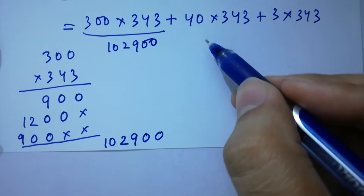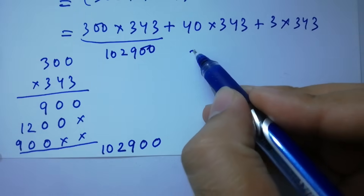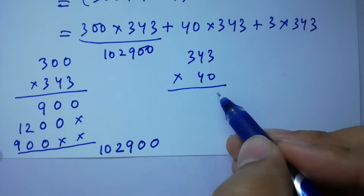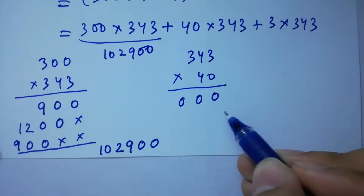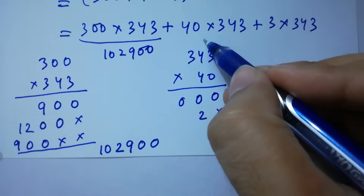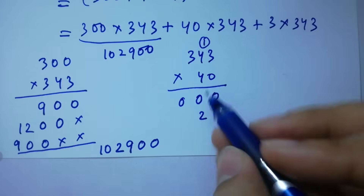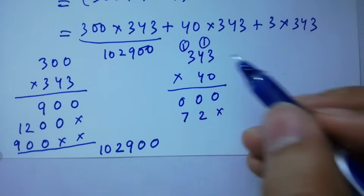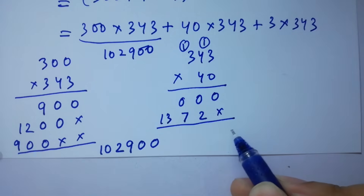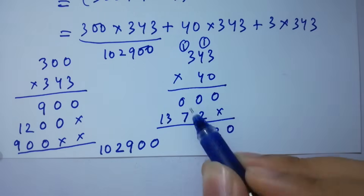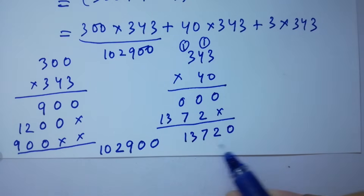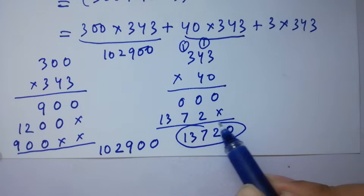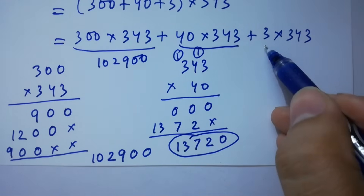Next, 40 times 343. 343 times 40: 3 times 0 is 0, 4 times 0 is 0, 3 times 0 is 0. Then 4 times 3 is 12, 2 here 1 carry; 4 times 4 is 16, plus 1 is 17, 7 here 1 carry; 4 times 3 is 12, plus 1 is 13. Adding them: 0, 2 plus 0 is 2, 0 plus 7 is 7, 3 as it is, and 1 as it is. So 40 times 343 equals 13,720.